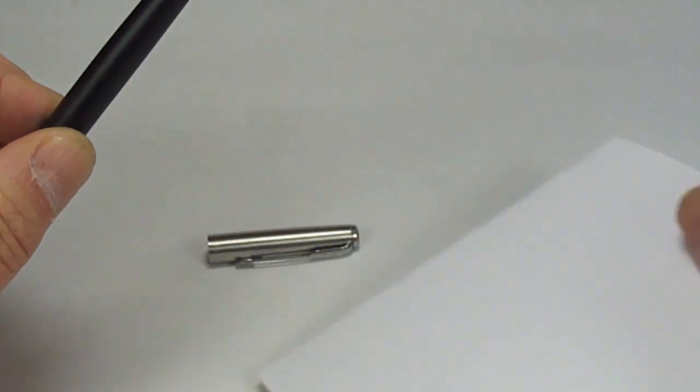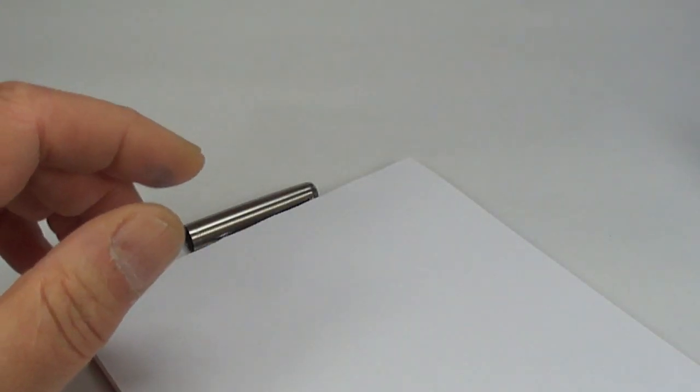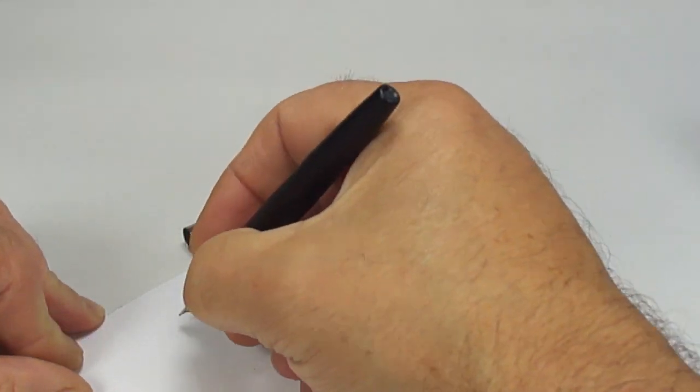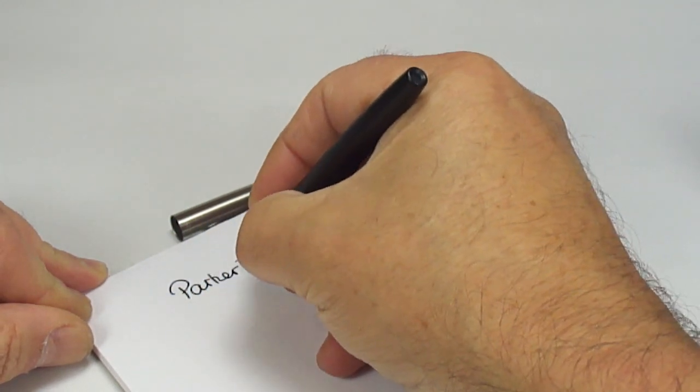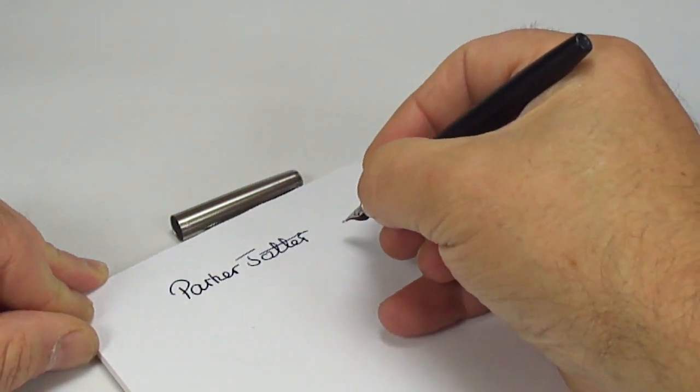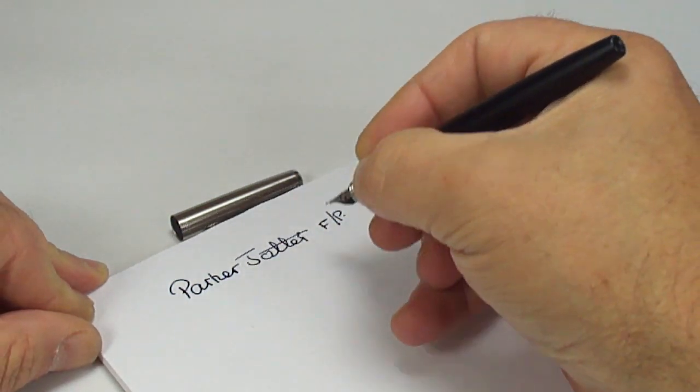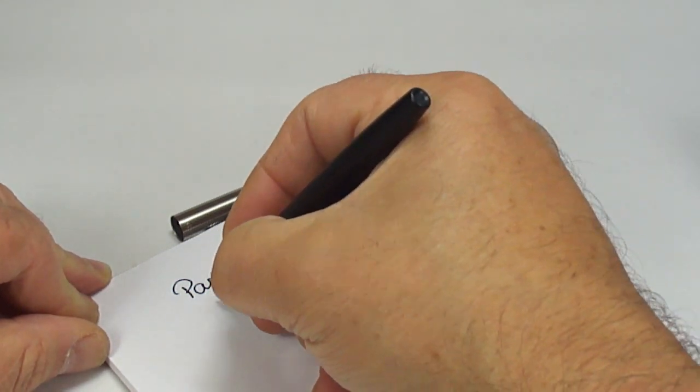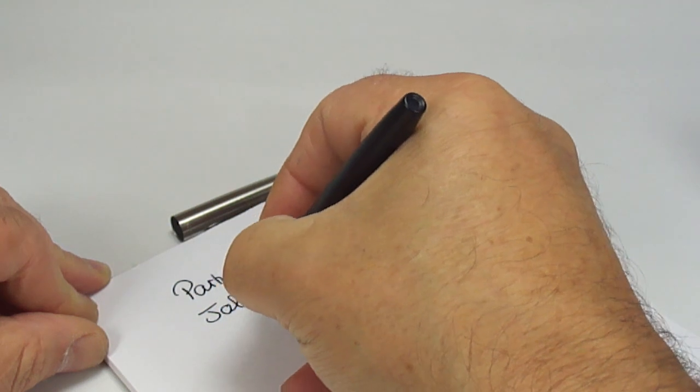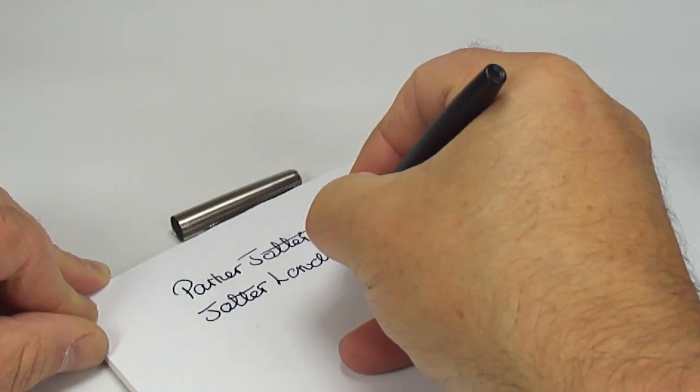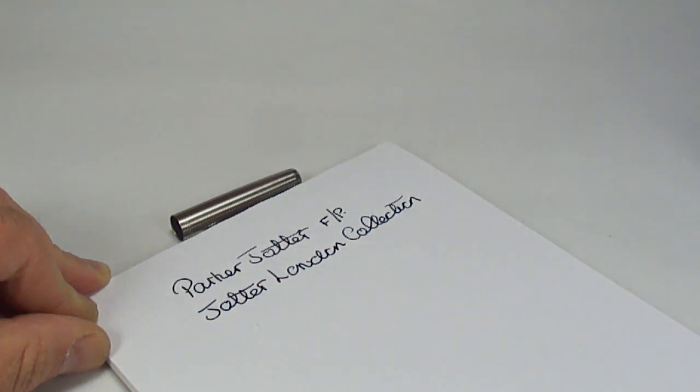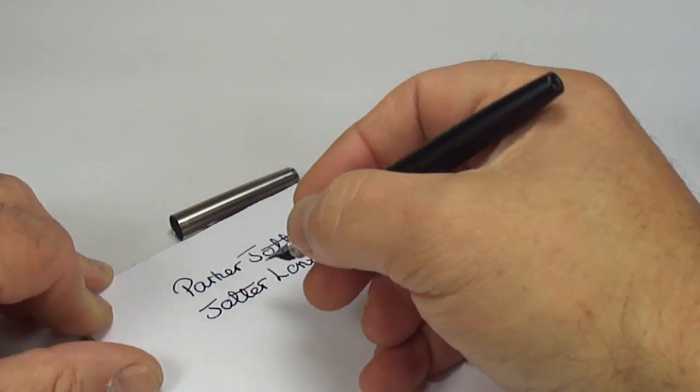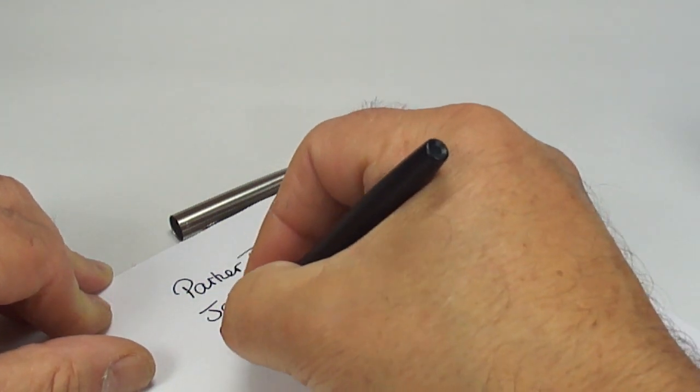So let's see how it writes, what we'll do we'll just do a dip test so let's dip the nib in the ink and what we have is a Parker Jotter, this one being the fountain pen as we said, this is from the Jotter London collection, just give it another little dip.